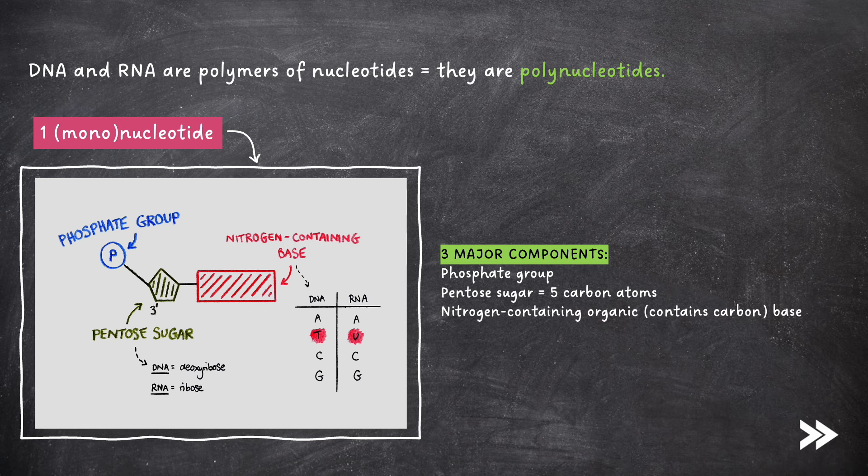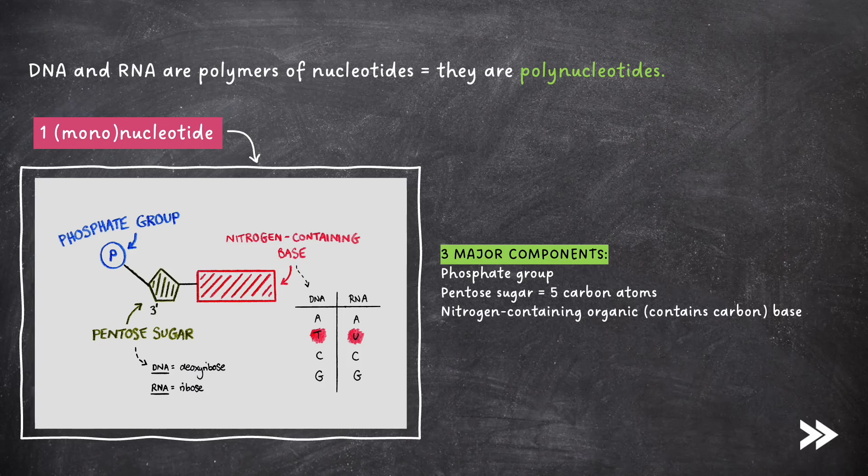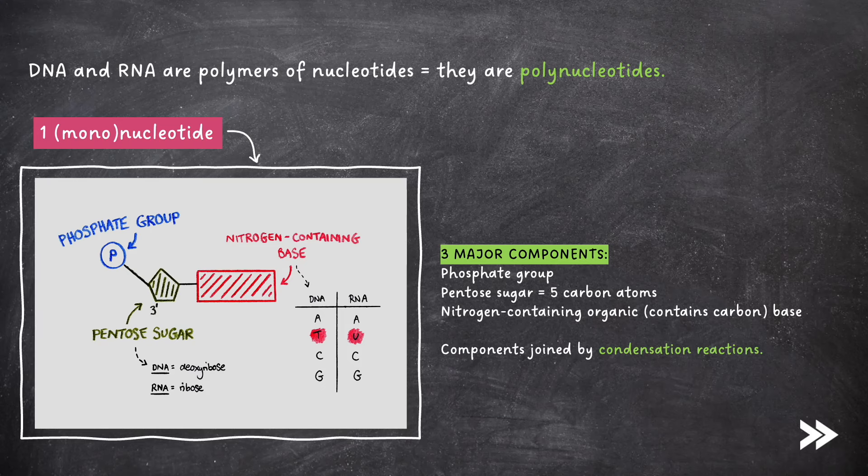This is bound to a nitrogen-containing organic base, organic meaning that it contains carbon. In DNA, this base can either be adenine, thymine, cytosine, or guanine, and in RNA, the thymine is replaced by uracil. Note that the phosphates, pentose sugar, and base are all joined together by condensation reactions.